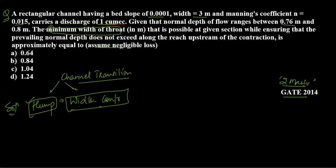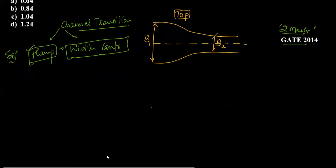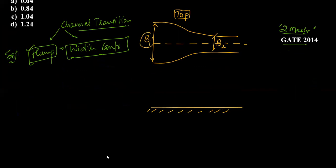To understand this problem, consider the top view of the channel. Looking at the plan view, the channel has width B1 at section 1 and a reduced width B2 at the contracted section. The width decreases, and the minimum width section is called the throat section. The question asks us to calculate the minimum value of B2, the throat width.